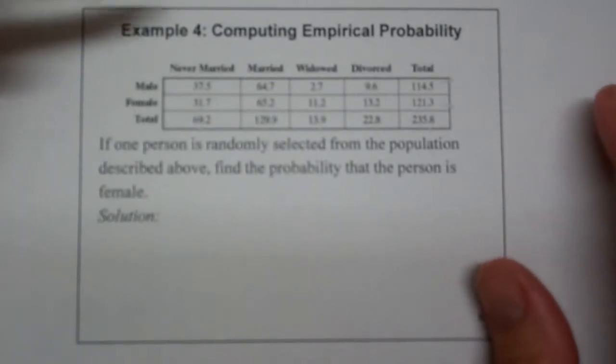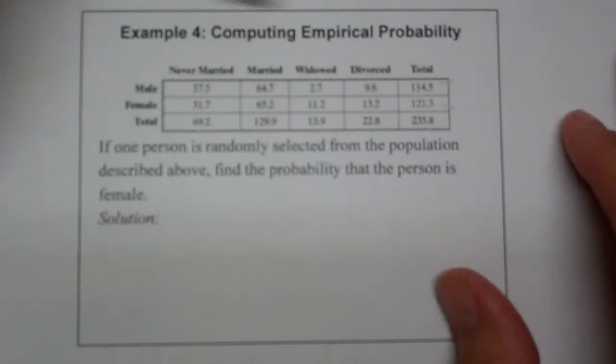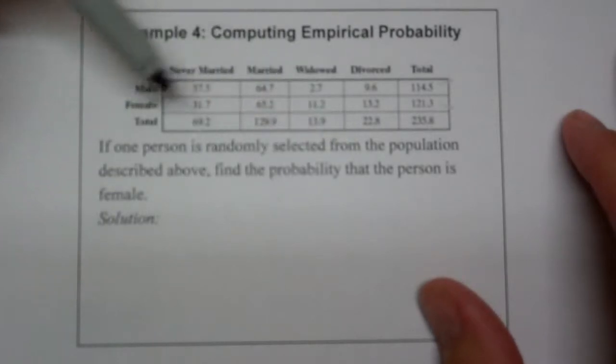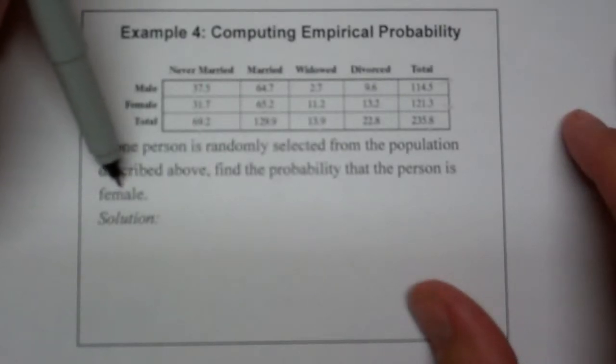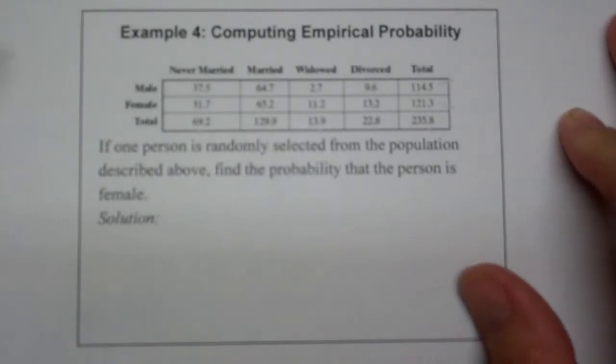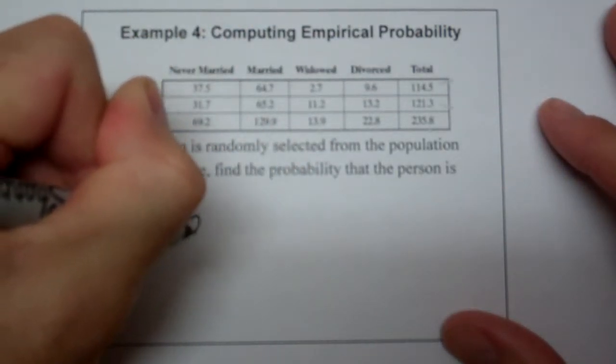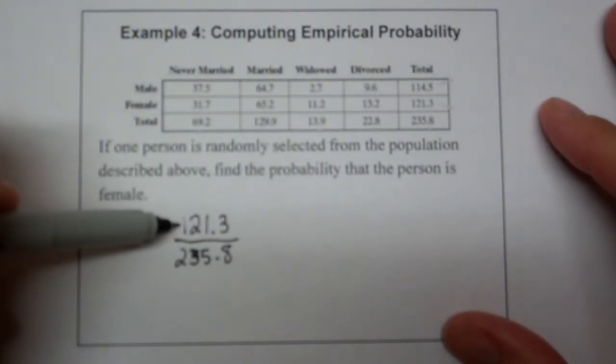Now, I'm a happily married guy, but some of you that are watching this video may not be, well, not happily married, but you may be single. And so we want to calculate an empirical probability. So if one person is randomly selected from the population described above, find the probability that that person is a female. So you go out to the club, what's the probability that you're going to run into a female? Well, if we look, in the observed population, females represent 121.3 million